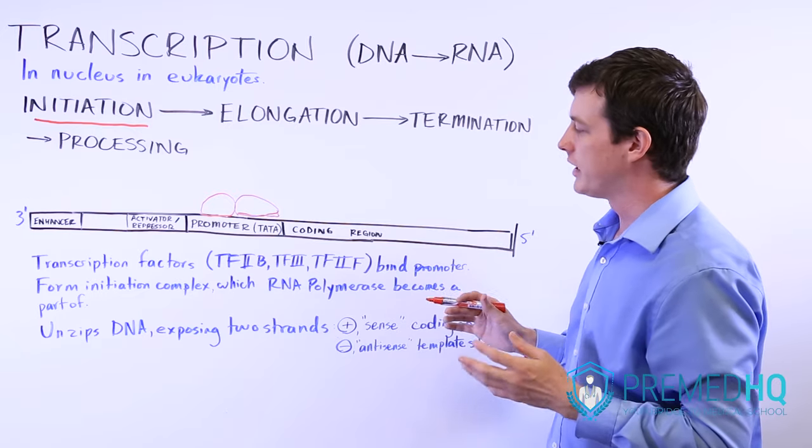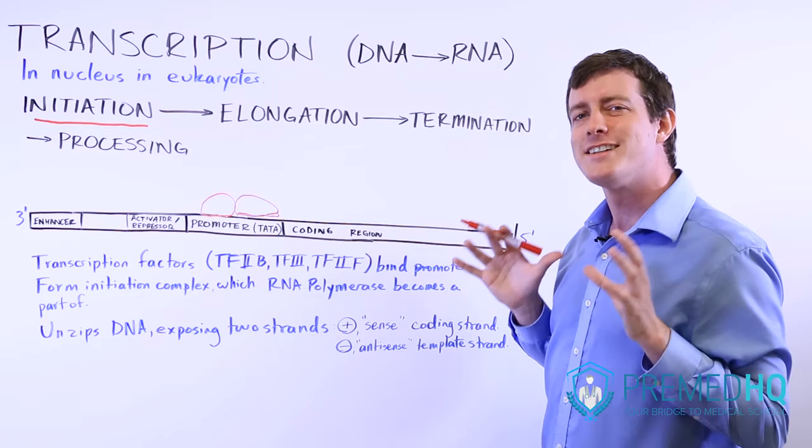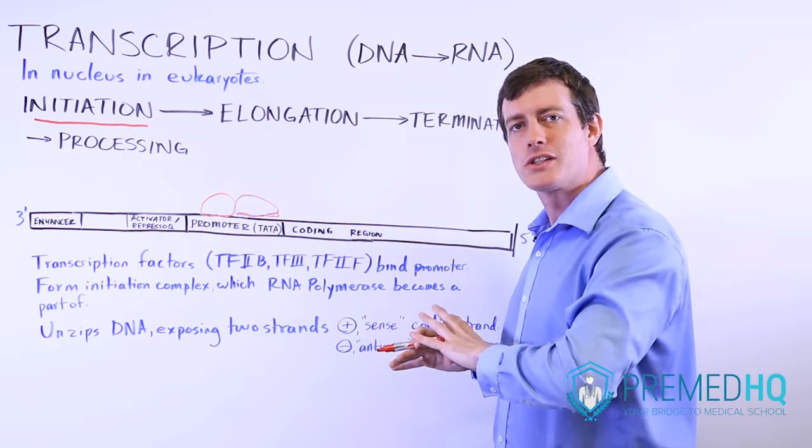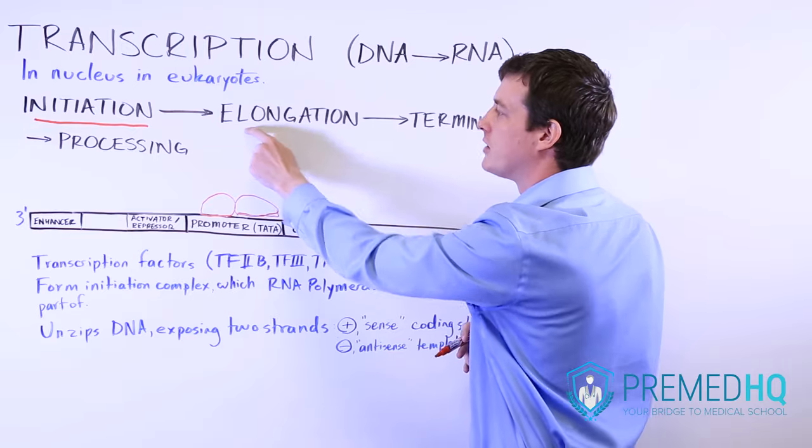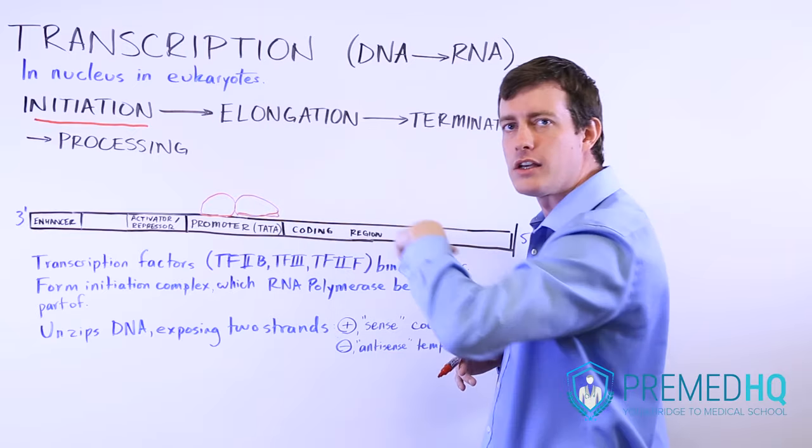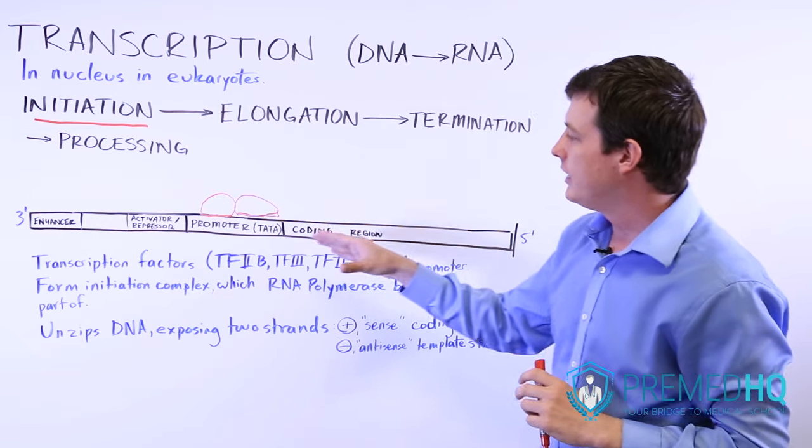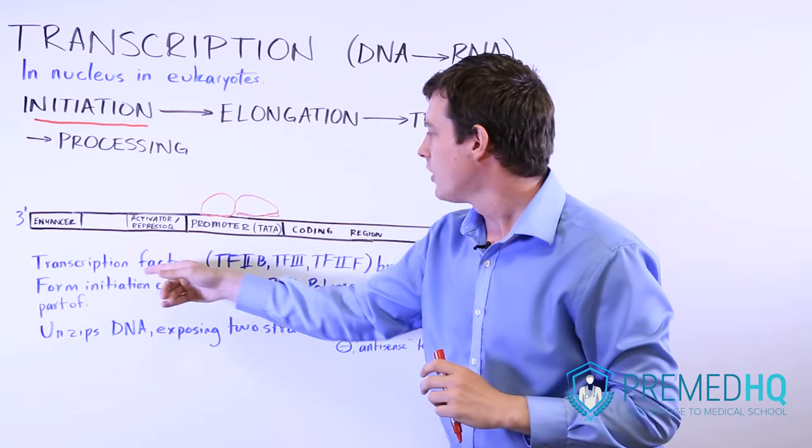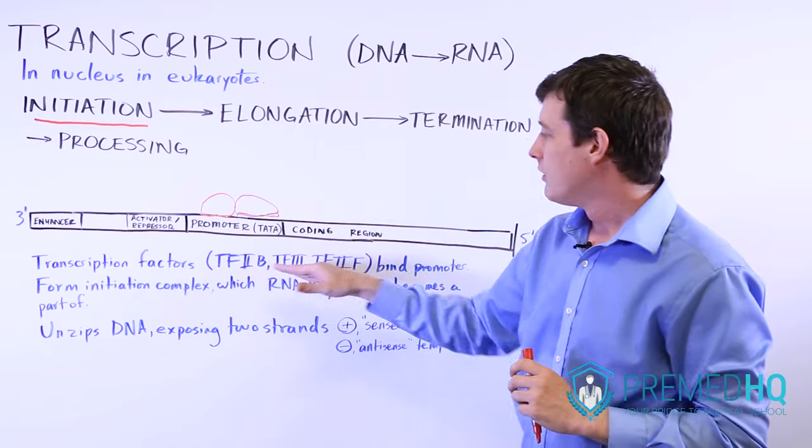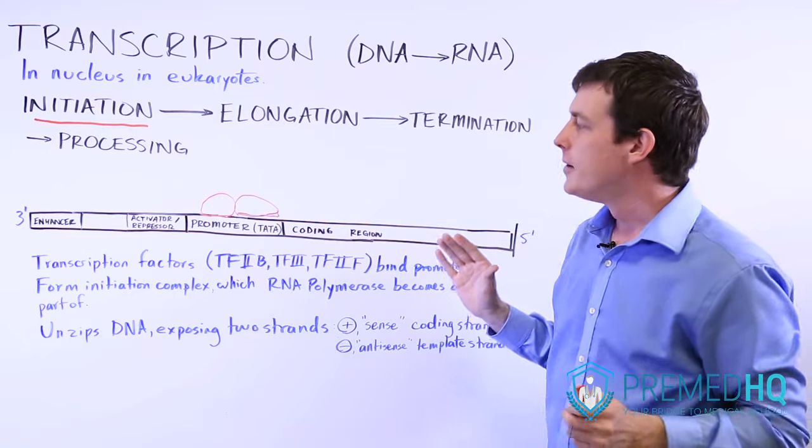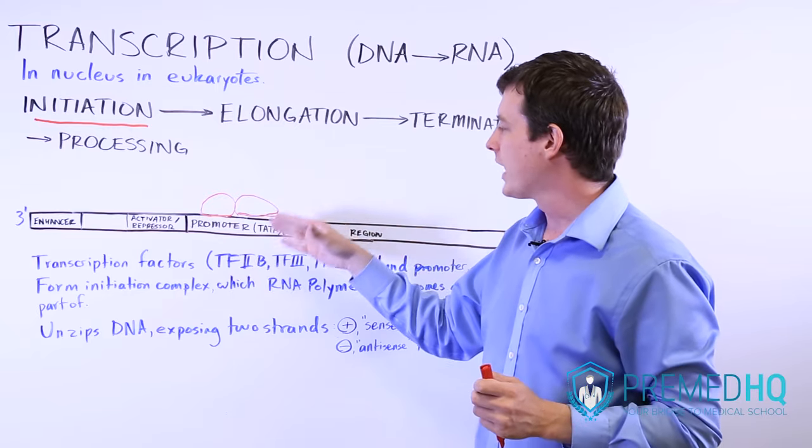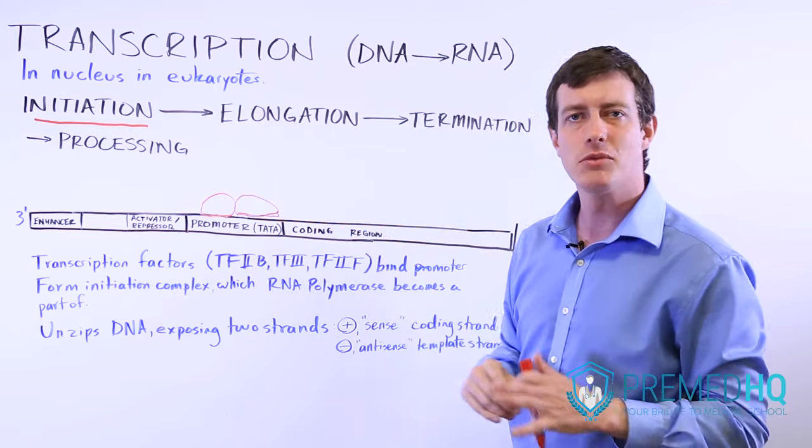And this initiation complex includes and attracts RNA polymerase, which will be the part that participates in the elongation phase when you make that RNA transcript. And so the initiation complex is started by transcription factors, which are known as TF something, and then that attracts and includes the RNA polymerase.